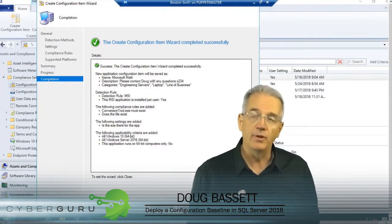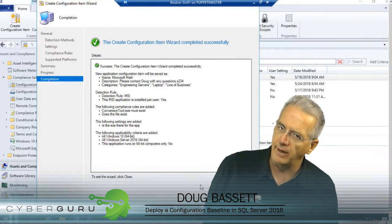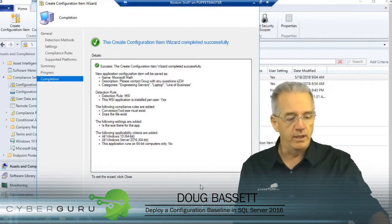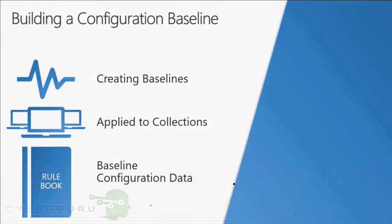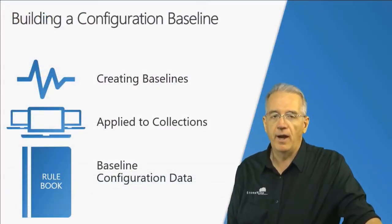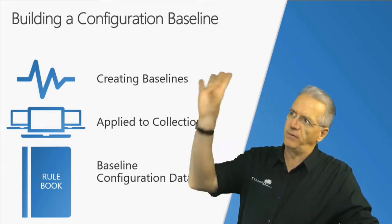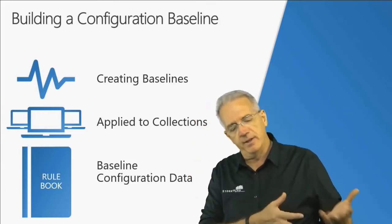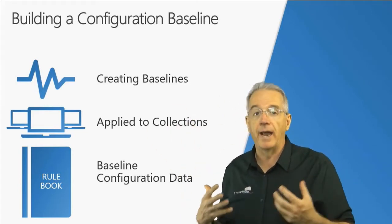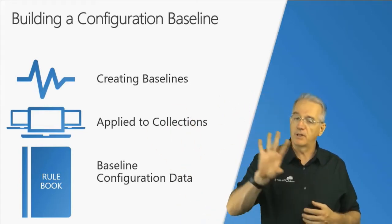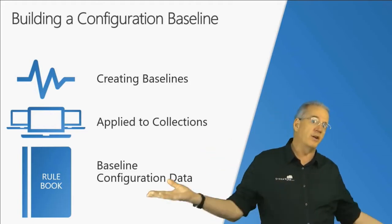These configuration items are our Lego blocks. We haven't pushed them out to anybody yet. So the very next thing we need to do is create what is called a configuration baseline. A configuration baseline is a variety of our Lego blocks — this configuration item, and this one, and this one — put together. This baseline can have one configuration item or a bunch of them.